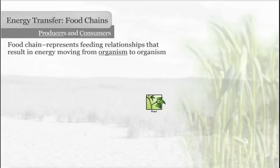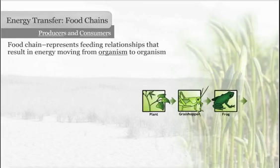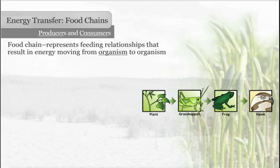A food chain is a graphic organizer representing a series of feeding relationships that result in energy moving from organism to organism within an ecosystem. Organisms in a food chain are either producers or consumers.